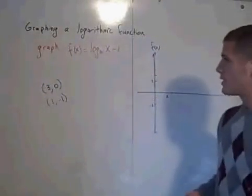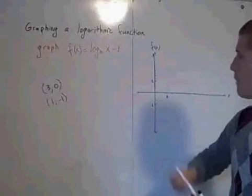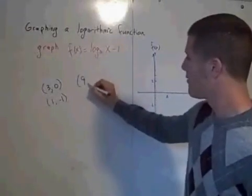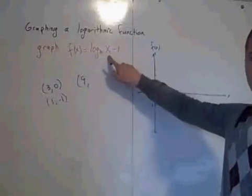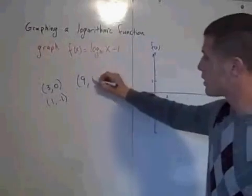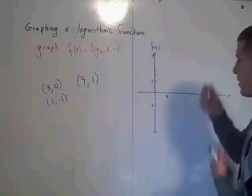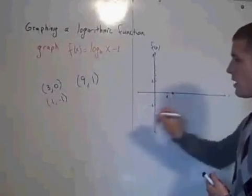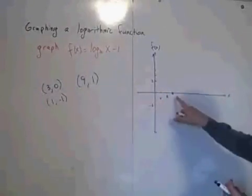So we've got two points here. Let's find another point. Maybe 9. If you pick 9 for x, log base 3 of 9 is 2 because 3 squared is 9. 2 minus 1 is 1. So you've got three points. You have a point at (3, 0), at (1, -1), and at (9, 1).